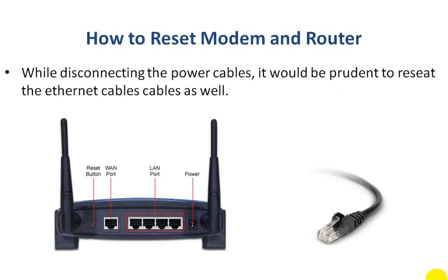While you have the power cables disconnected, it would be prudent to re-seat the other cables such as the Ethernet cables as well. These are the cables that connect between the ports on the router, with the other end connecting to the computer, and the WAN port connecting to the cable modem. Just press down on the clip, pull it out, push it back in, and feel that positive locking click so you know it's seated properly.